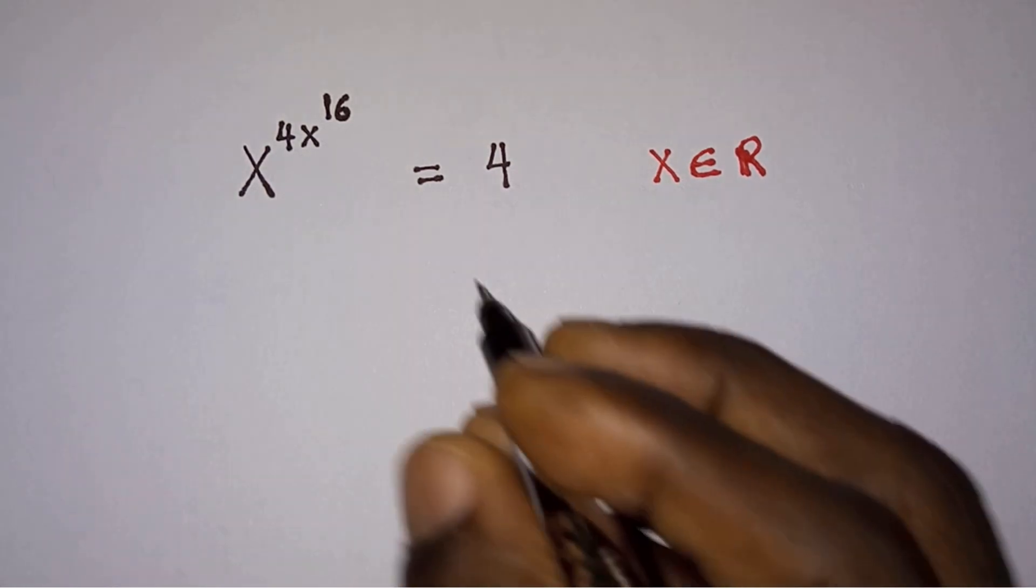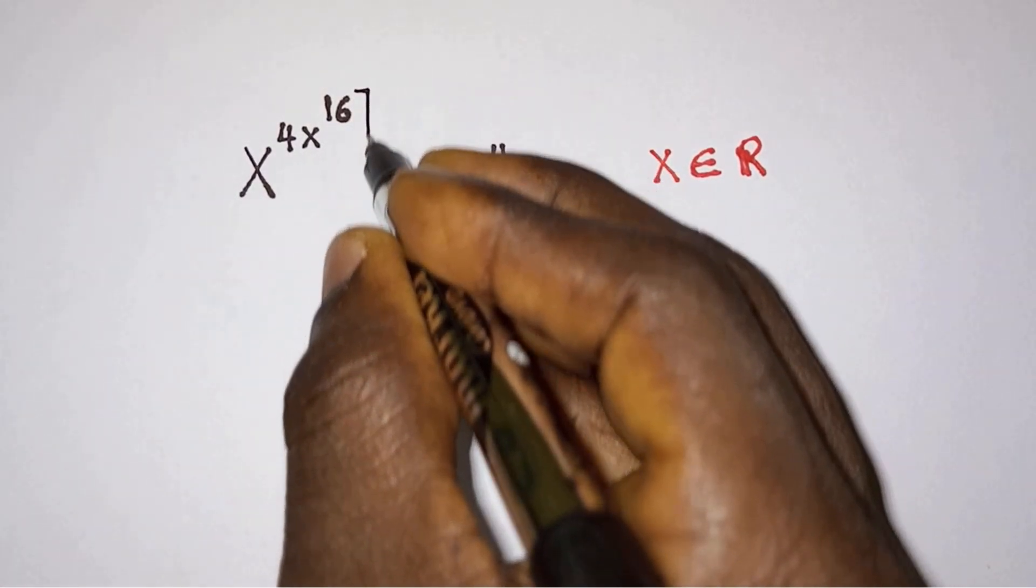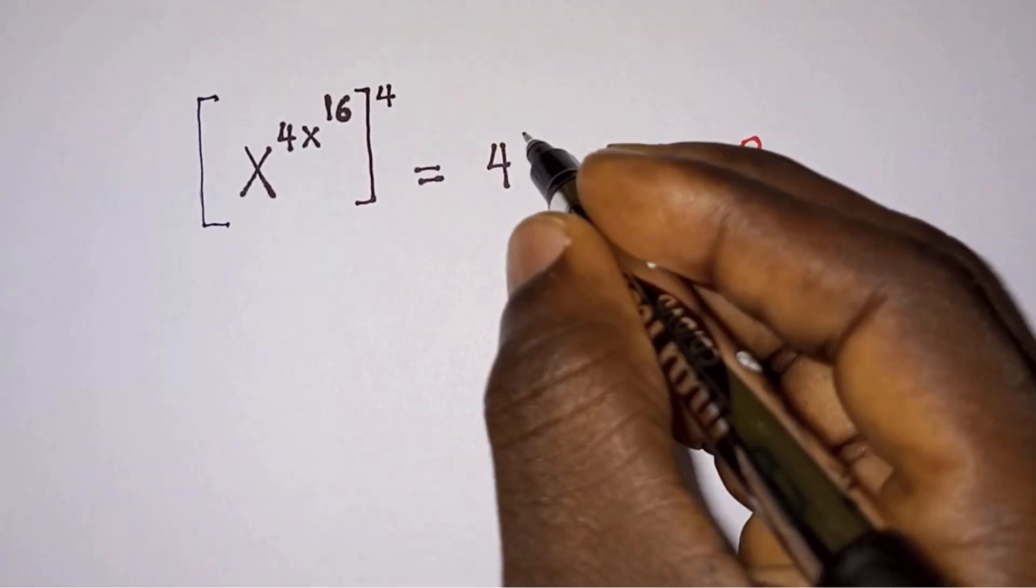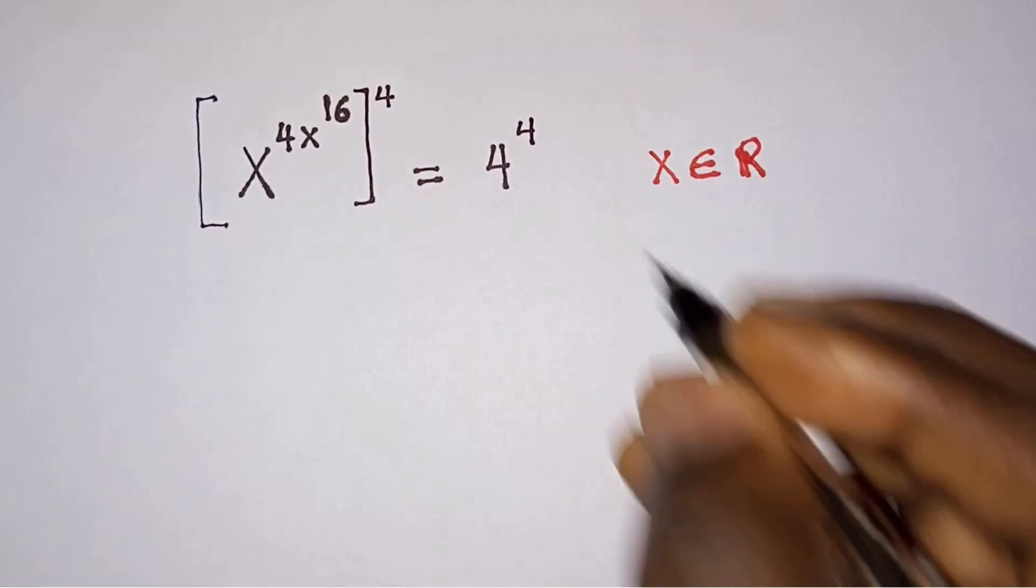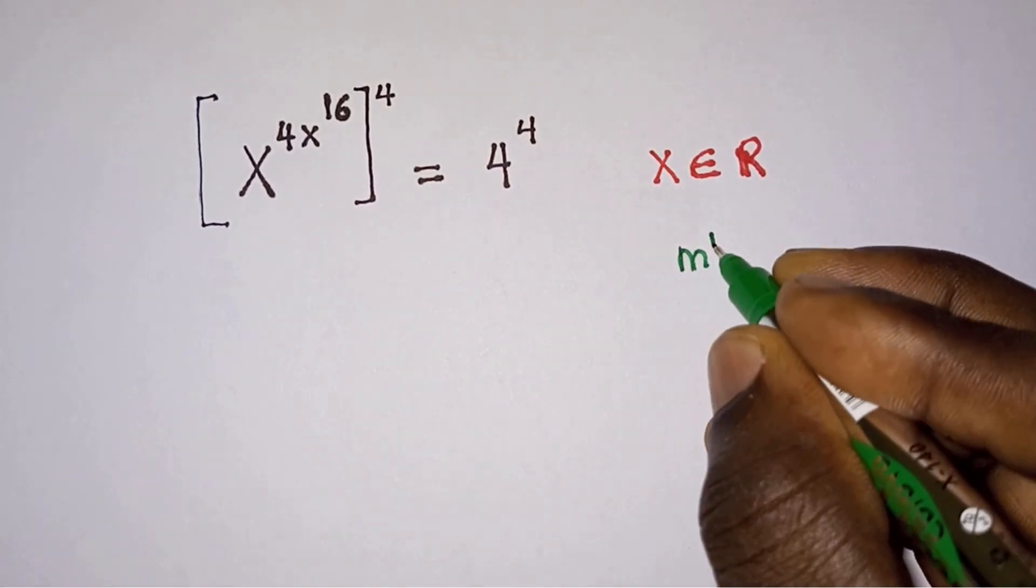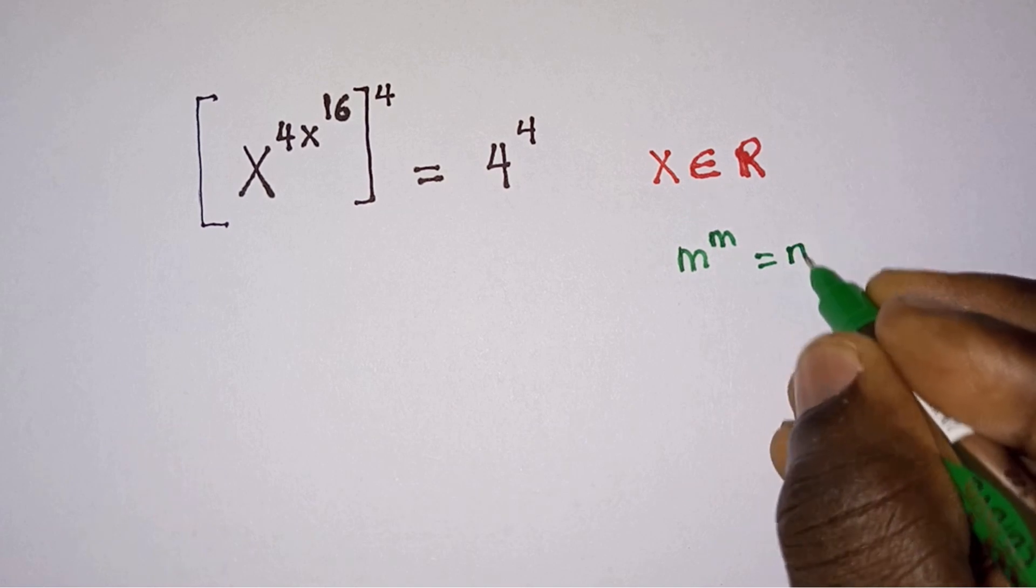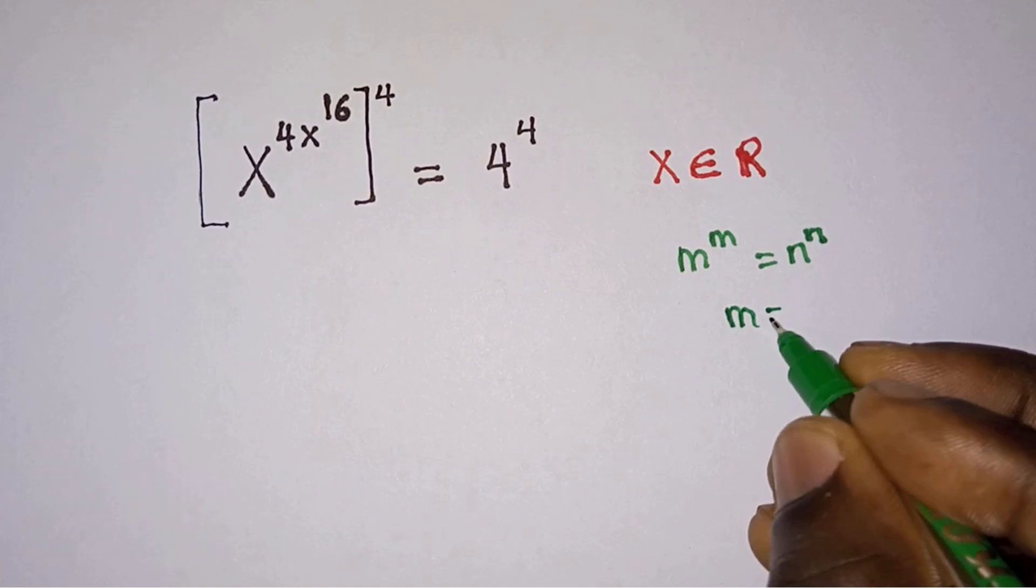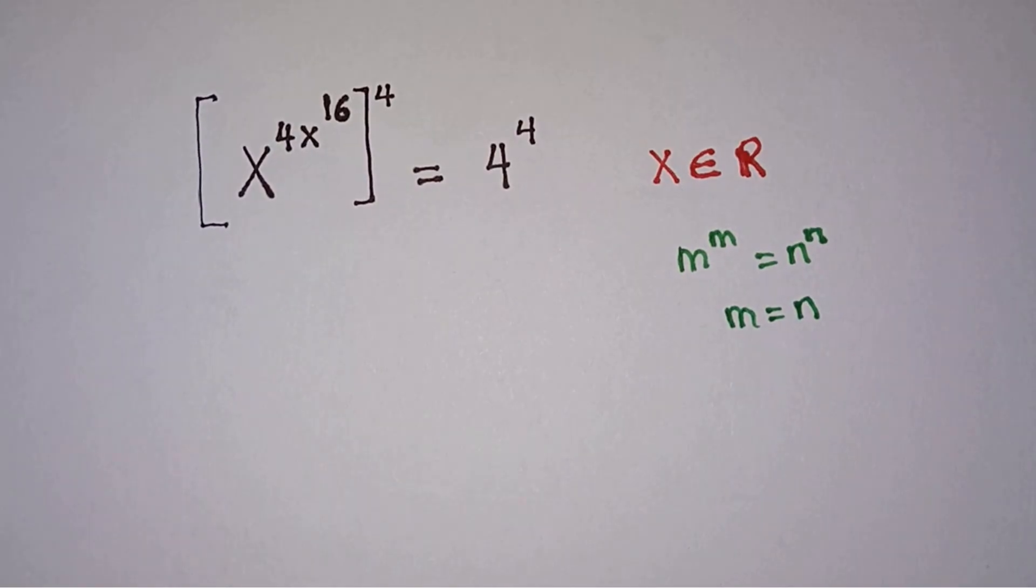So first of all, let's go ahead and raise each side of the equation to the fourth power, and there is a reason for that. The reason is that we want to produce something like m to the power m equals n to the power n, and if this happens, we can say that m is equal to n. So simple.